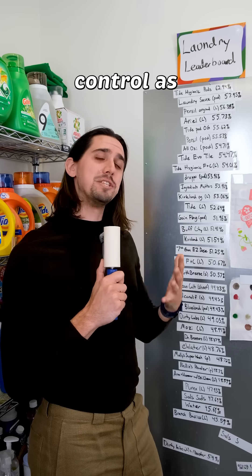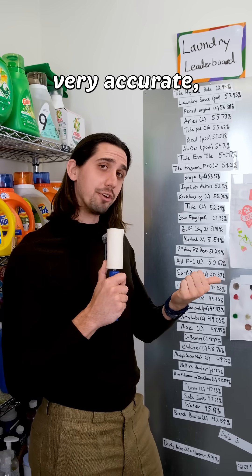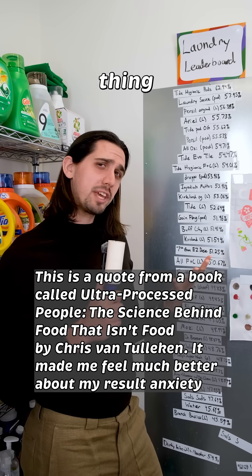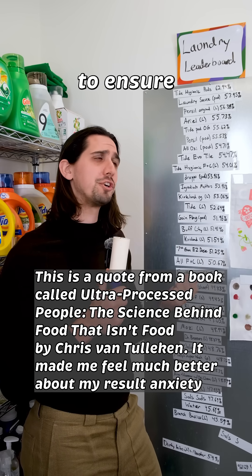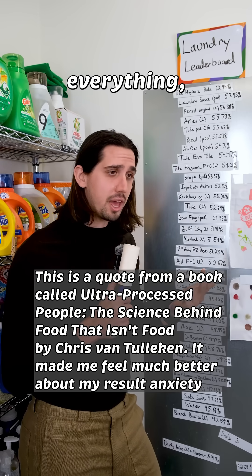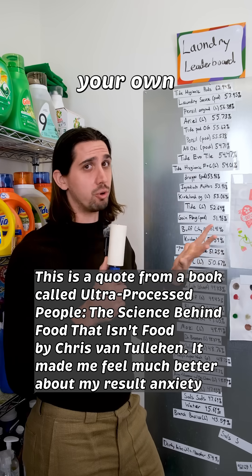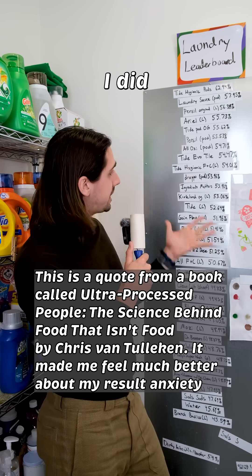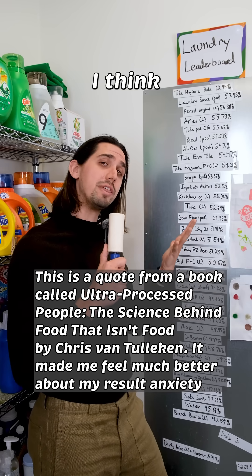My goal is to control as many variables as possible so the results are very accurate but also really easy to recreate. The hard thing about being an experimental scientist is being paranoid enough to ensure that you do everything right and you thought of everything, but not being too paranoid where you can't trust your own results. At some point you need to say: I did this experiment. These are the results. This is what I think it means.